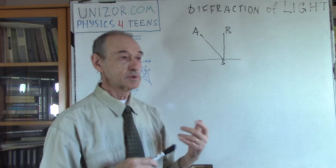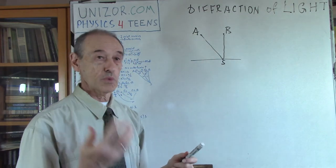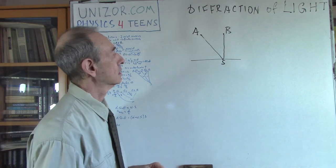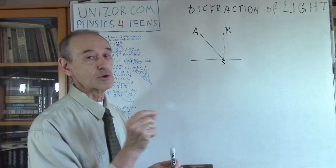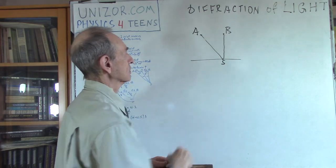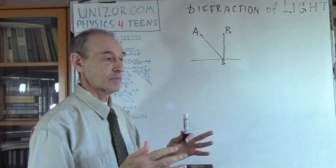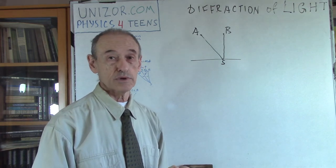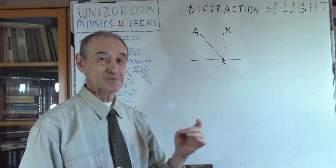Now we will talk about a more complicated case. Instead of two very narrow slits — which are basically like points — we are talking about a bigger opening. It can be the lens in photo equipment, or the pupil of our eye, but in any case it's something substantial, greater than a point.